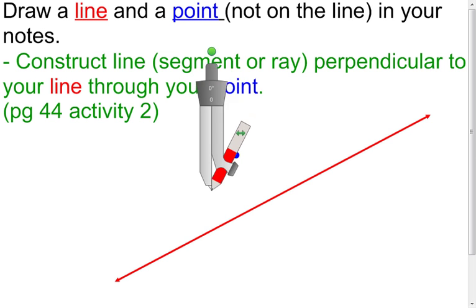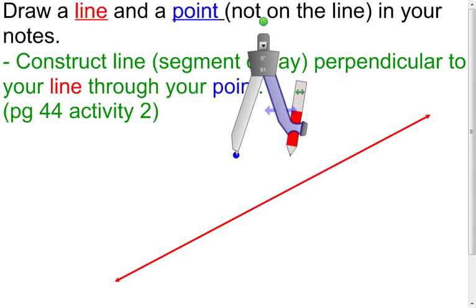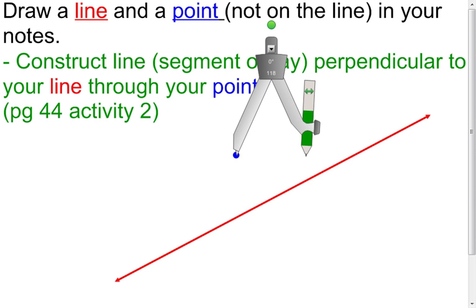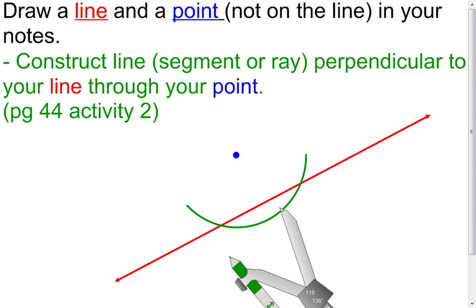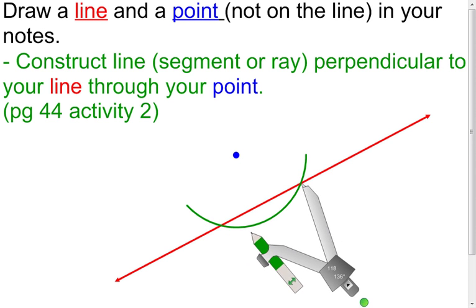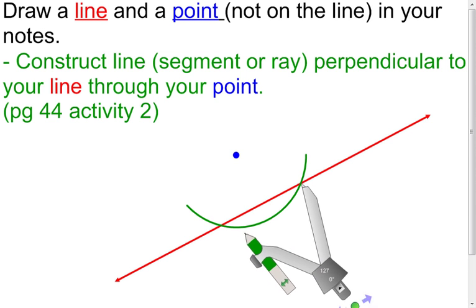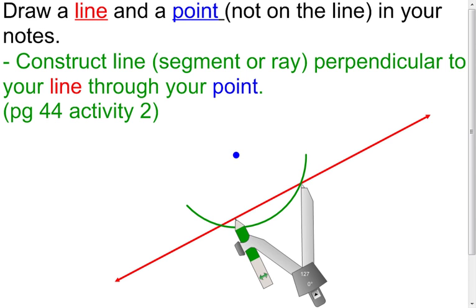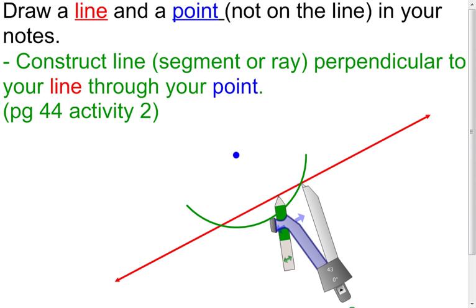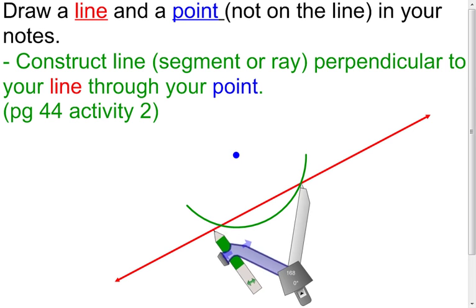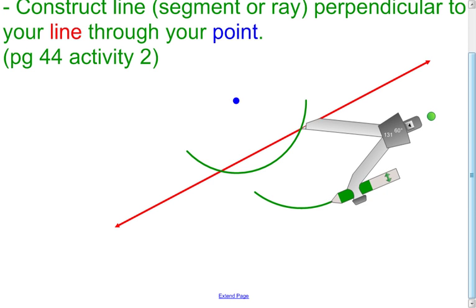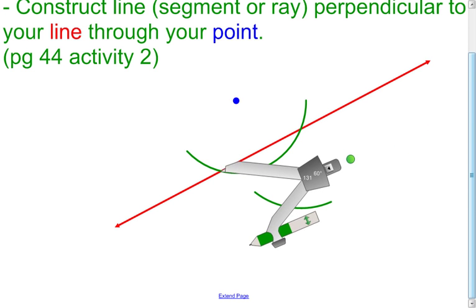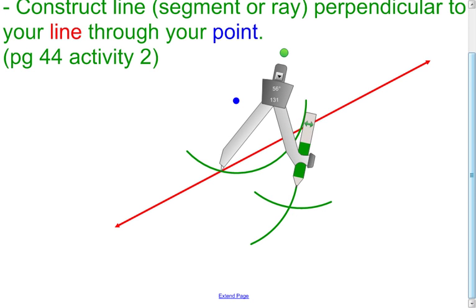You're going to need your compass. Put the point of the compass on the point and open up the compass so it hits the line at two different points. Now take the compass, put the point at one of those intersection points. You can open this compass as long as it's going to be longer than half the distance between the two intersection points — more than half. Then make an arc on the opposite side of the line that the original point was on. Go to the other intersection point and make another arc. Don't change the compass setting.